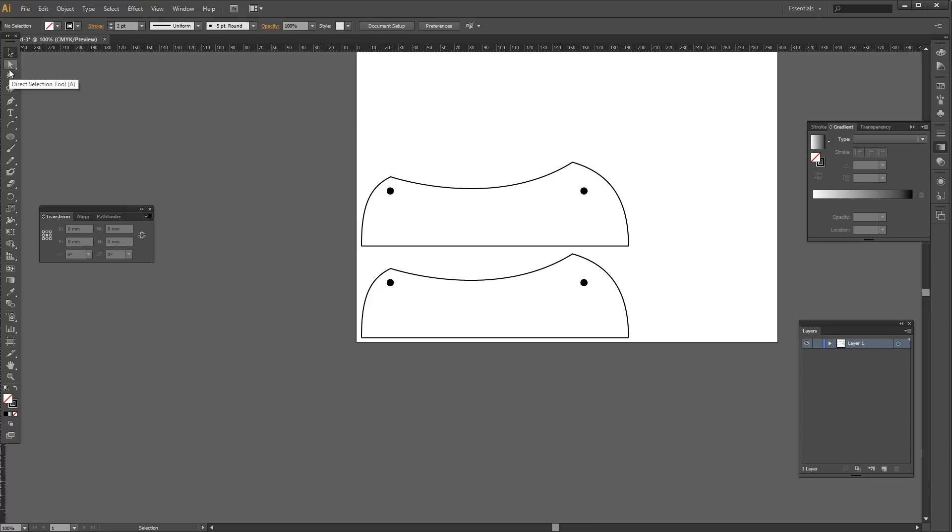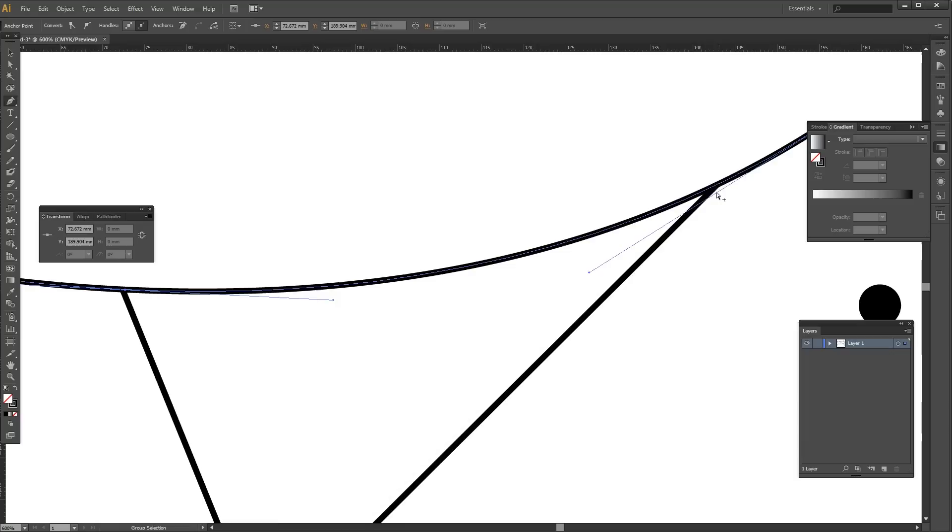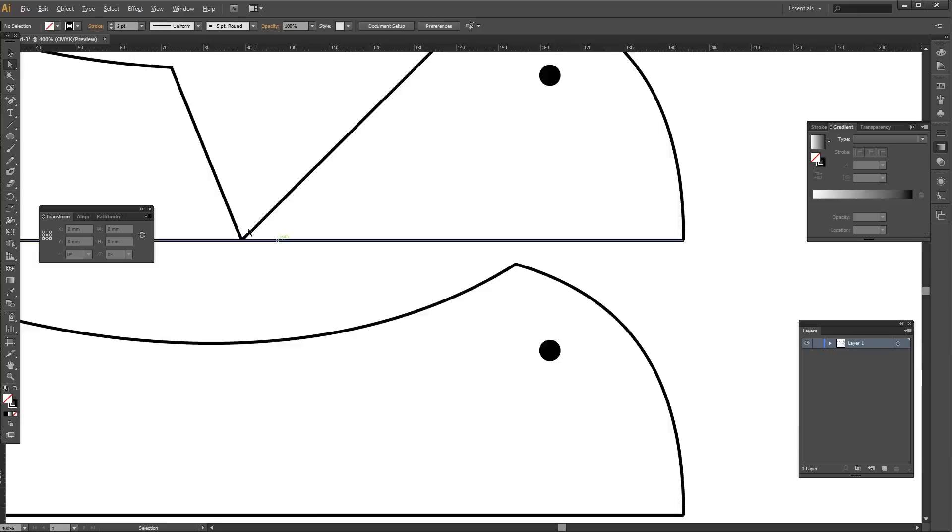I then added in two holes for dowels to align all the pieces when it time came for glue up. I duplicated that layer and turned the second into the other part I'd need for the two inside pieces.